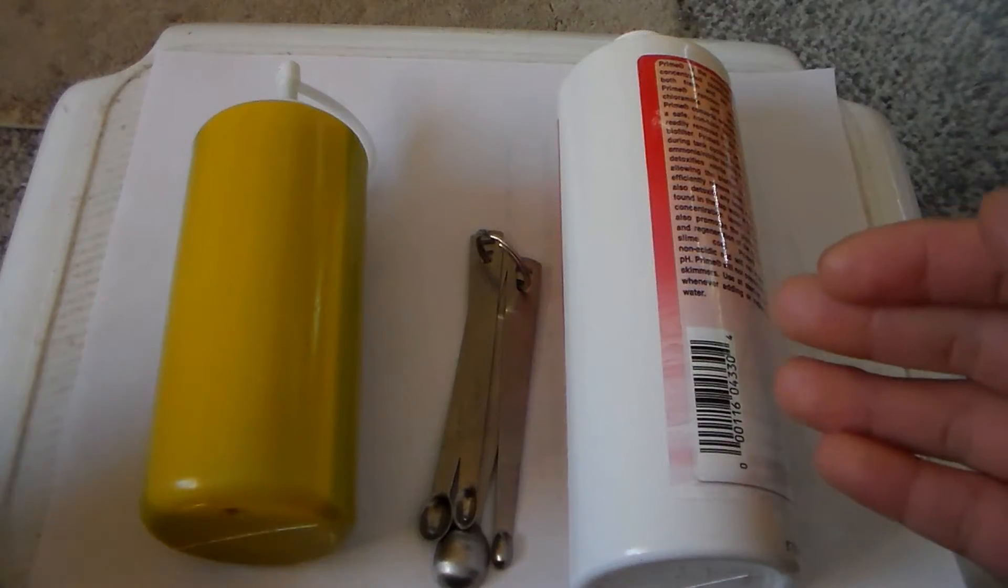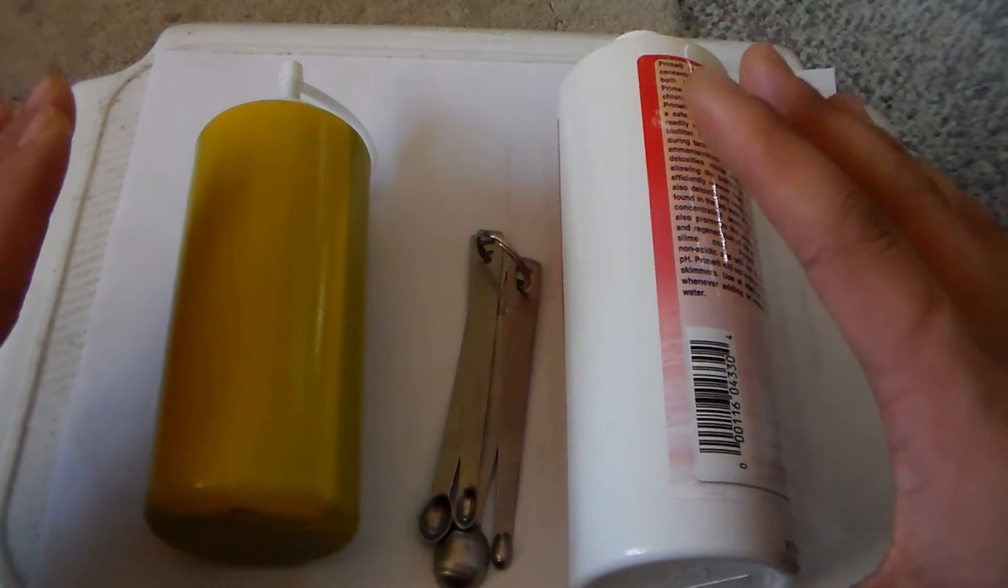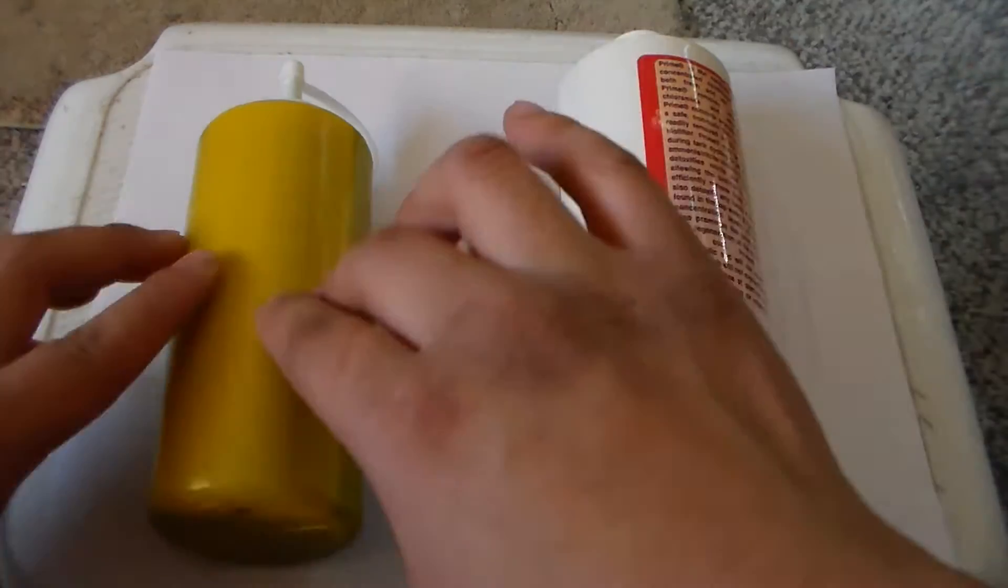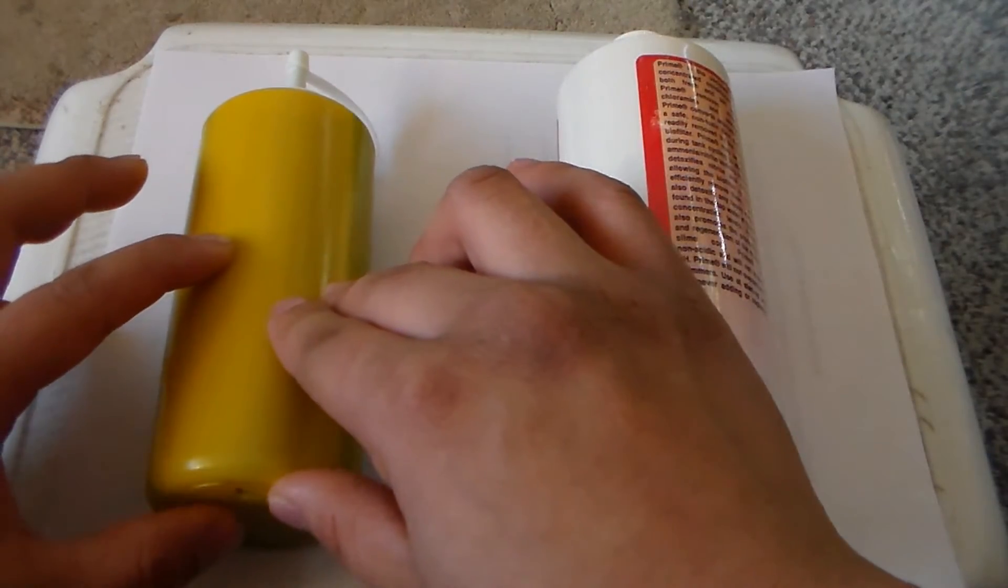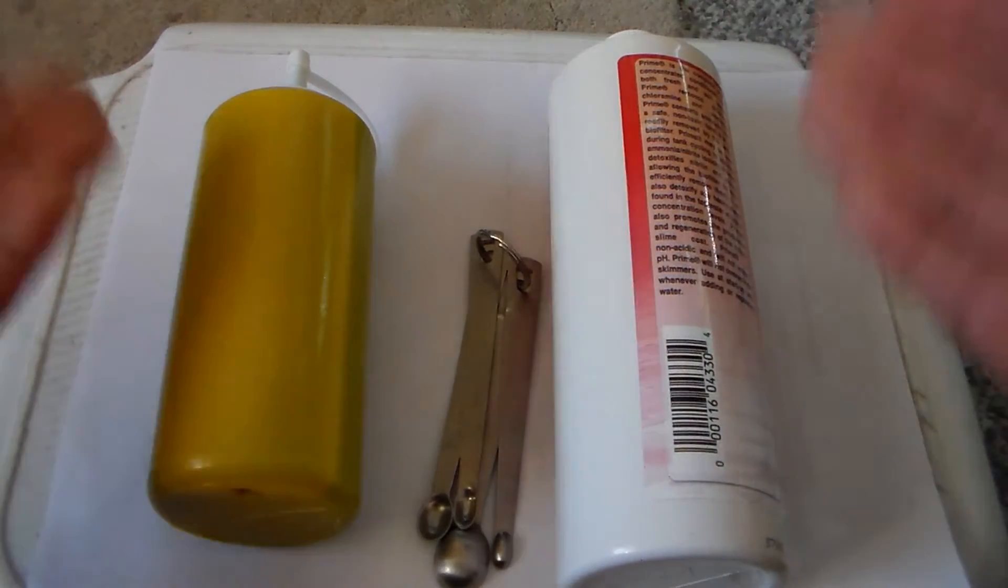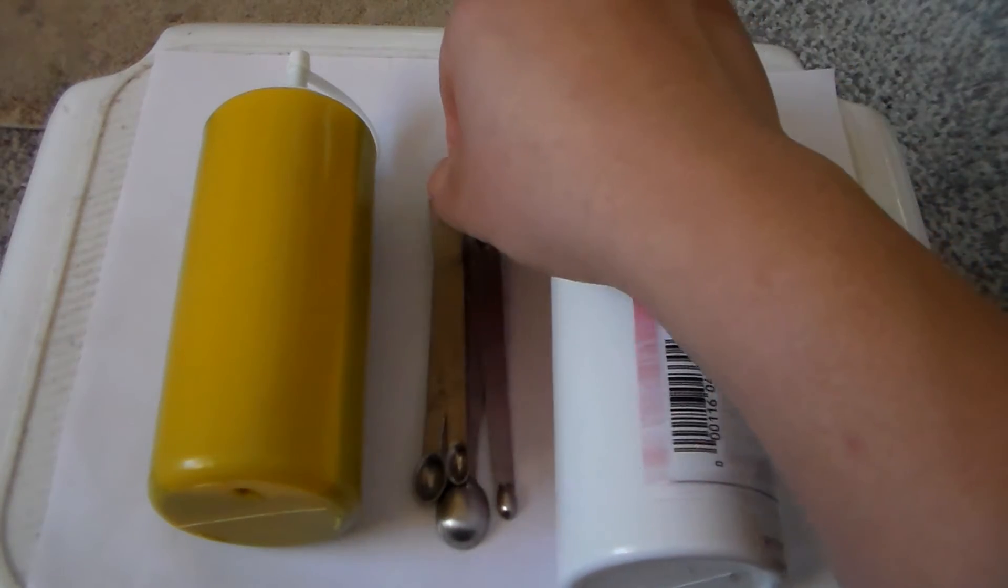The next thing we need is our storage container. Once we are not using the green water, we will be storing it in your fridge. So I have a mustard bottle here, an empty Prime bottle here, which I will find will work for you. Then I have my measuring spoon here.